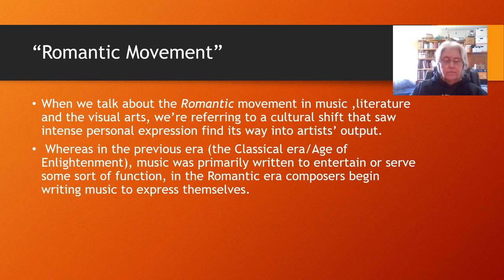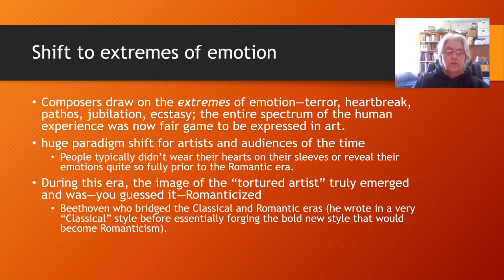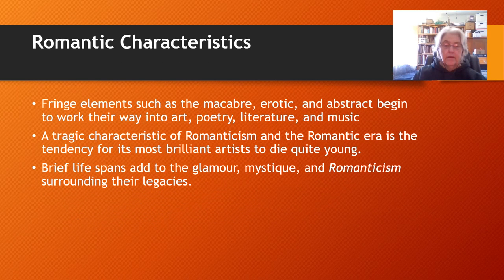The Romantic movement in music and literature was a cultural shift. The main thing about it was that we see personal expression coming to the fore instead of just sticking to the rules as we did in the classical era. We had lots of extremes of emotion, everything from being jubilantly in love to terror and heartbreak. Before this, people didn't show their emotions so much, but now it was no holds barred. Beethoven was the composer who bridged that gap from classical to Romantic. We'll be taking a look at some of these Romantic characteristics and how they work their way into the music, art, and poetry of the time.